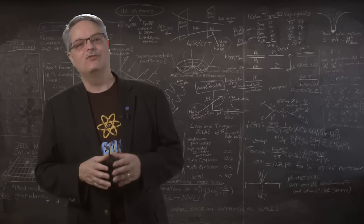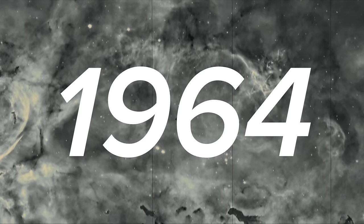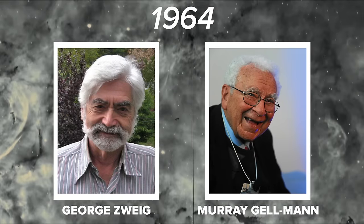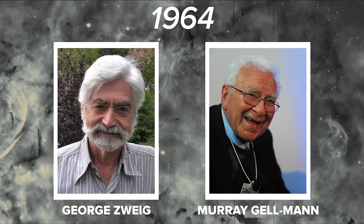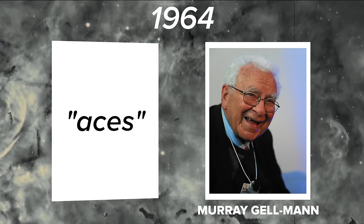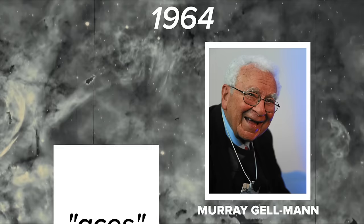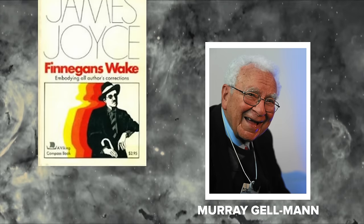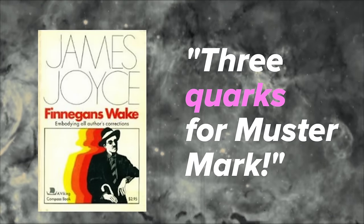Quarks are particles found inside protons and neutrons. They were independently proposed in 1964 by George Zweig and Murray Gell-Mann. While Zweig called these particles aces, it's Gell-Mann's label that stuck when he used a word from a phrase from James Joyce's Finnegans Wake.